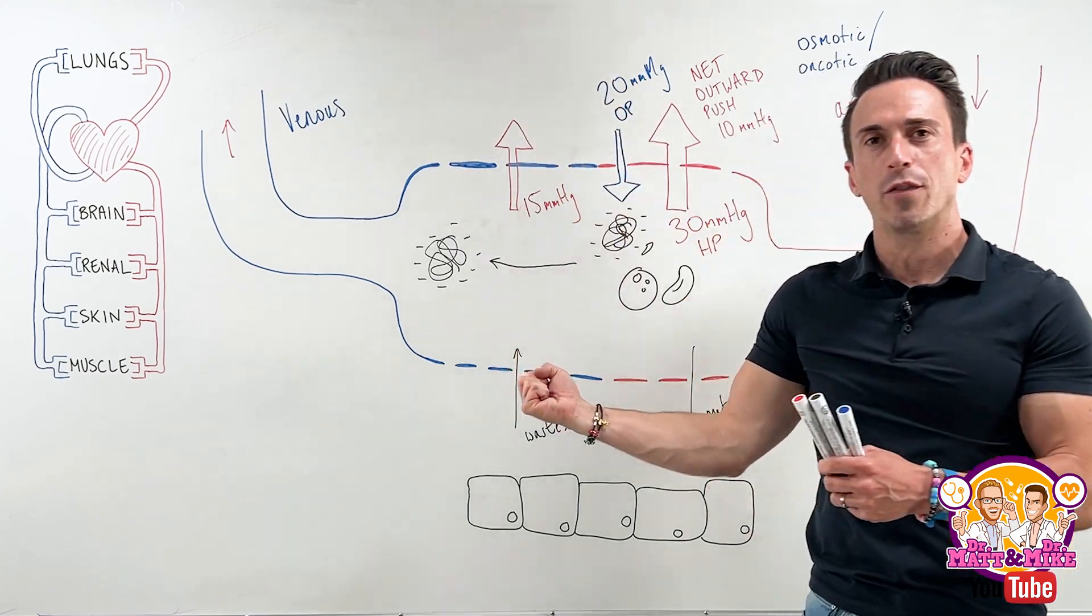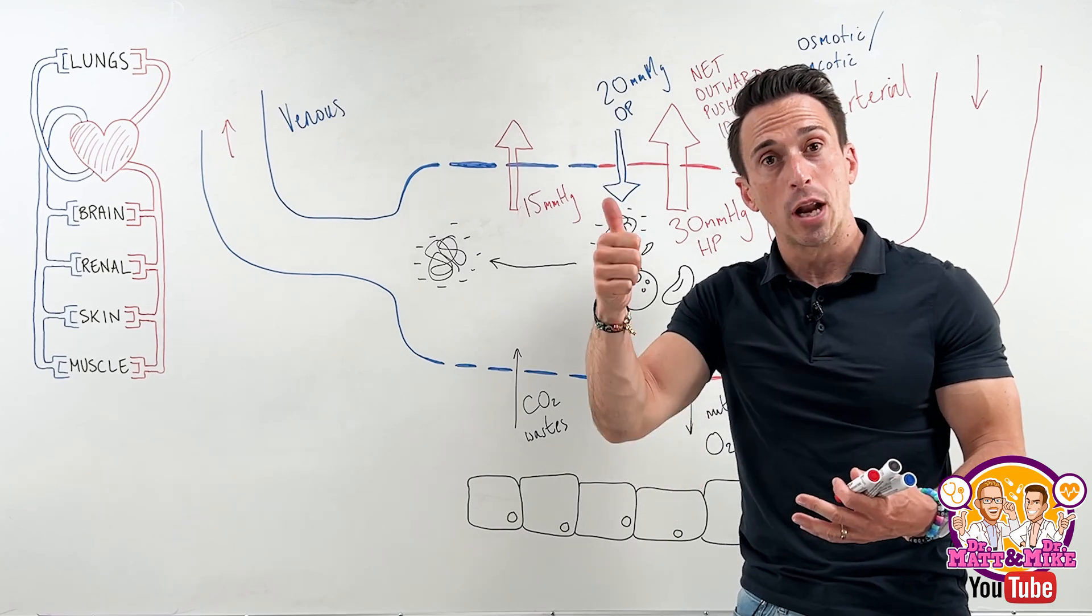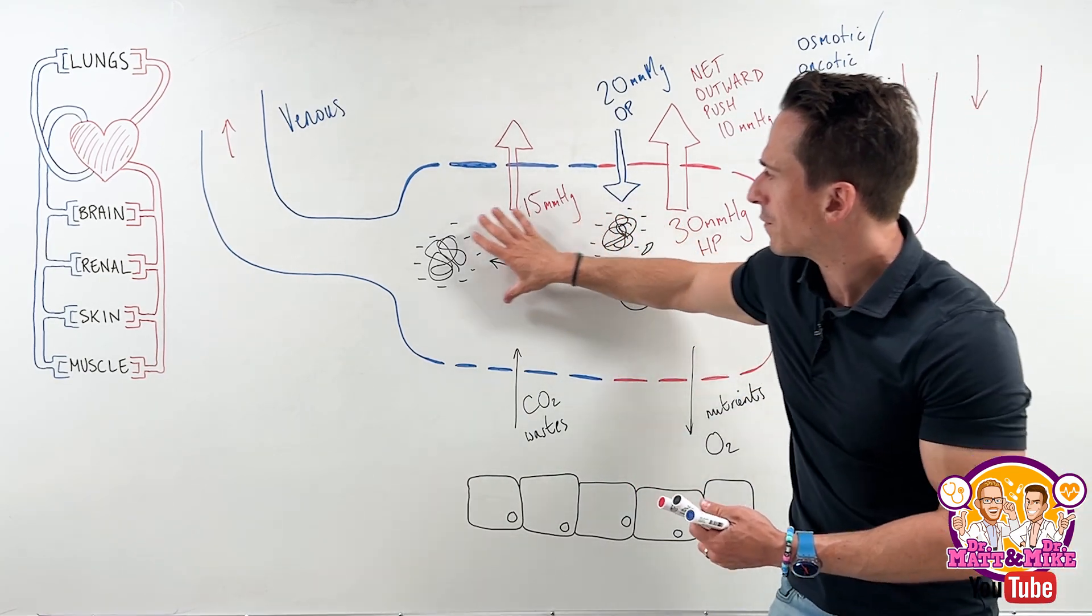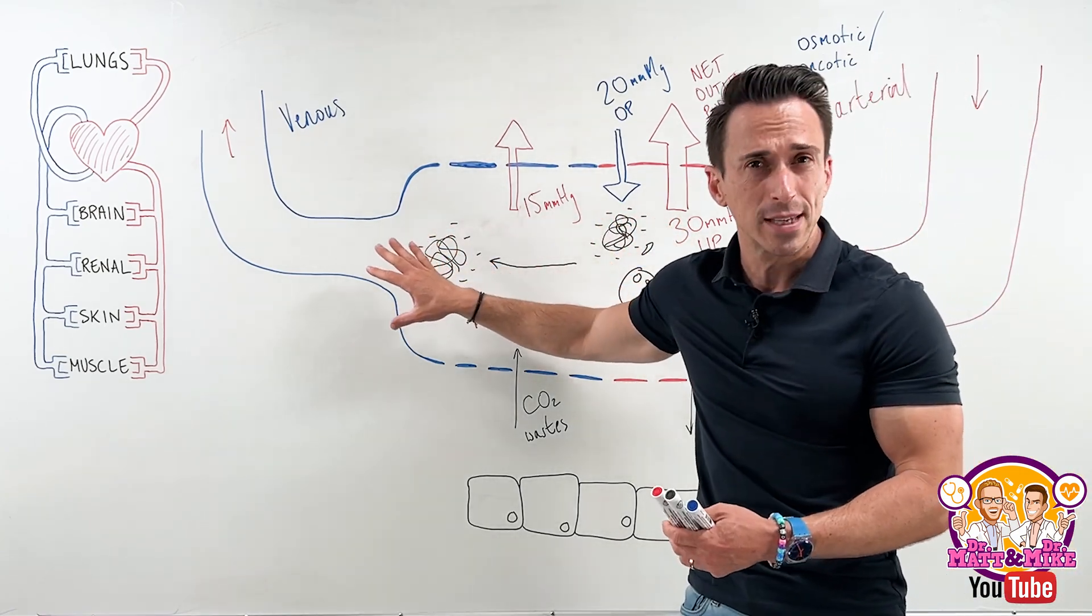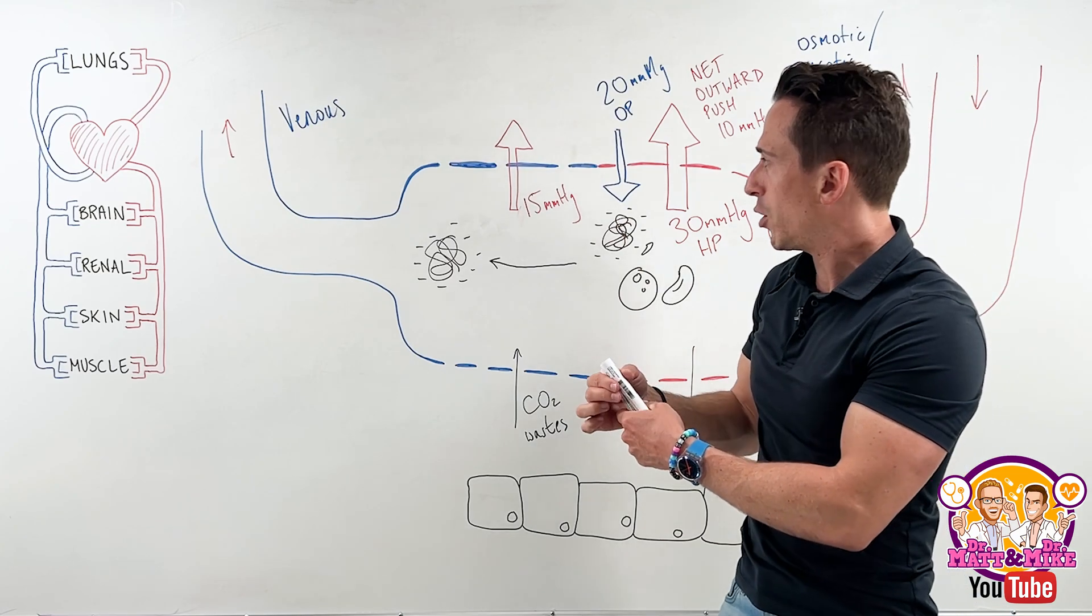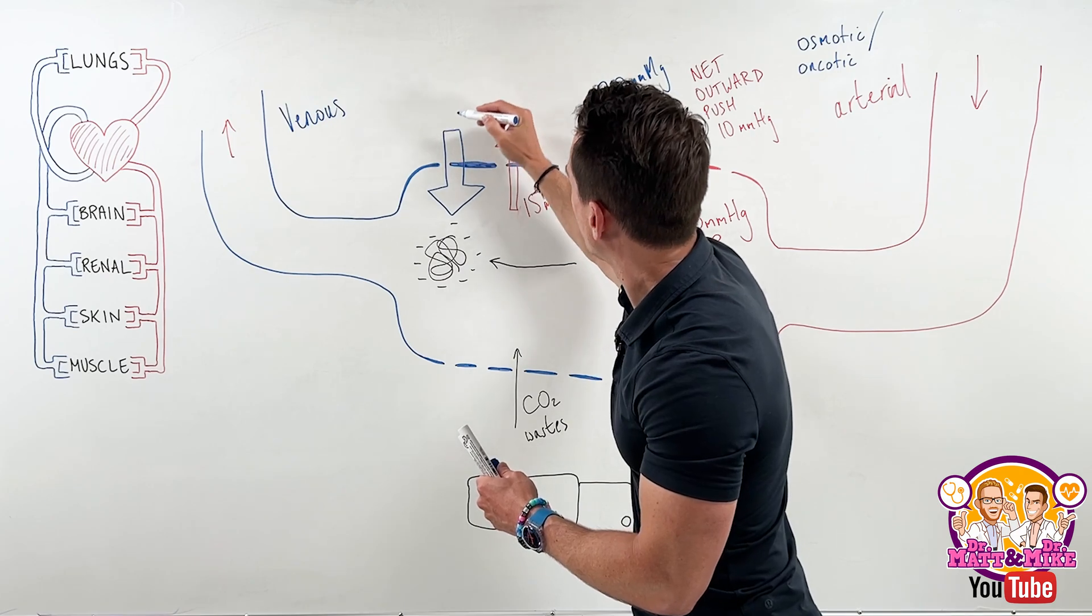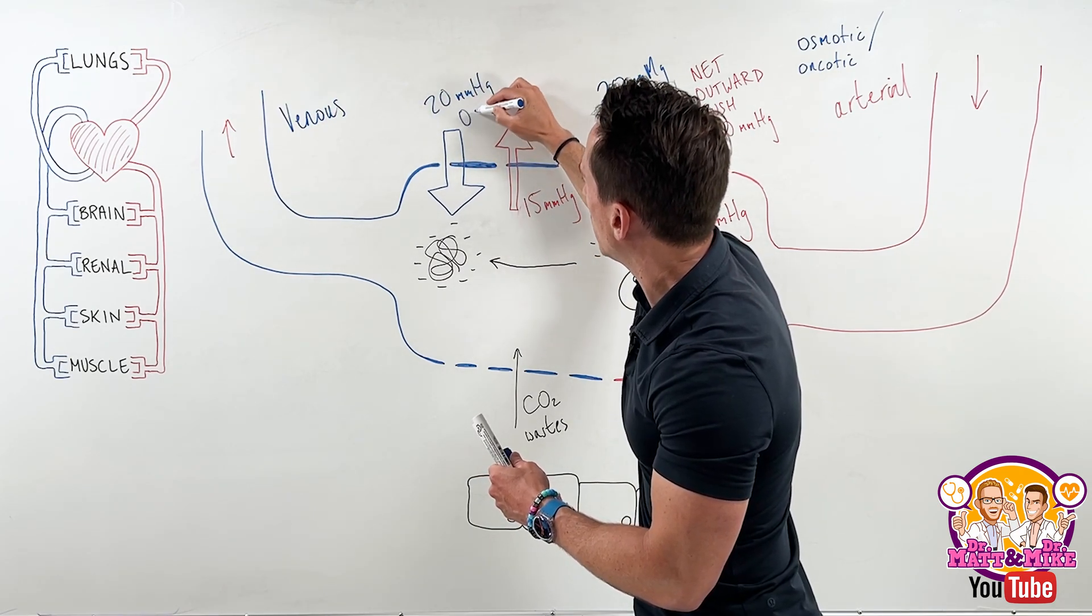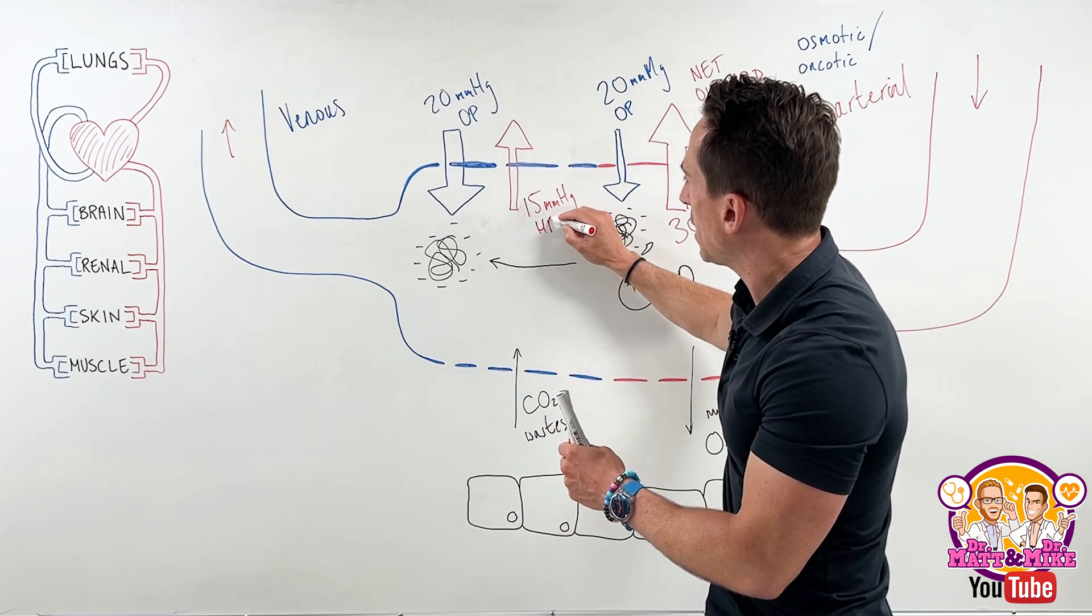What do you think about the inward pulling force, this oncotic or osmotic force? Do you think it's changed, gone up, gone down, all the same? None of these things have left. They've all remained the same. So the inward pulling force is about the same, 20 millimeters of mercury. We've got this inward pulling force of 20 millimeters of mercury, the osmotic or oncotic pressure. And this was the hydrostatic. Now who wins?